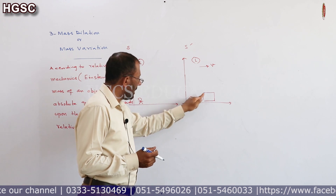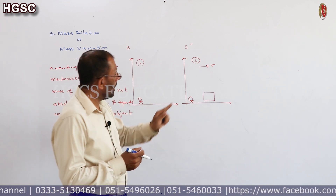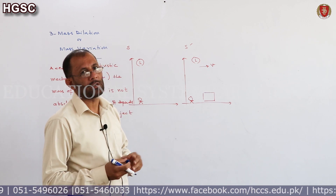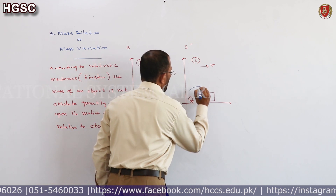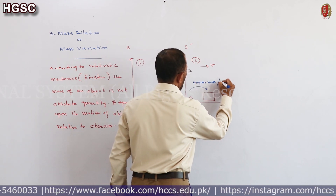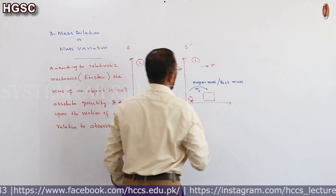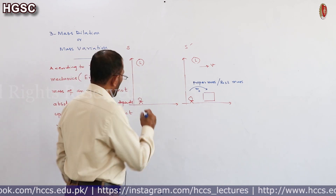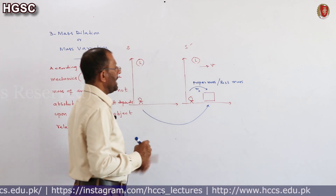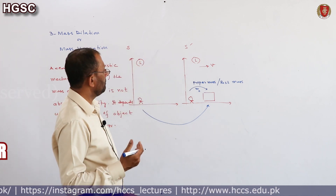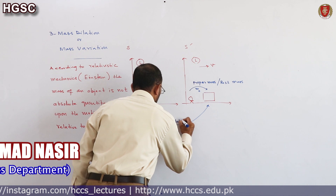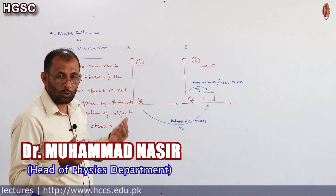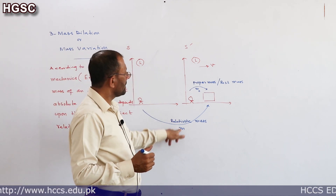یہ والا body اور یہ والا observer ایک ہی frame میں ہیں۔ اس observer کے لحاظ سے یہ object rest پہ ہے۔ اب یہ والا observer جس object کی mass measure کرے گا اس کو proper mass بھی کہتے ہیں، rest mass بھی کہتے ہیں — mass measured by observer S′. That is proper mass, also called rest mass, and it is denoted by m₀. اور یہ والا observer with respect to which the object is moving with uniform velocity V اگر اس object کی mass measure کرے، that mass is known as relativistic mass.